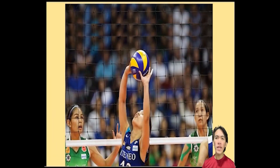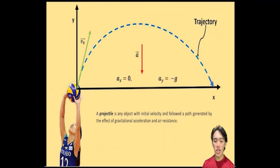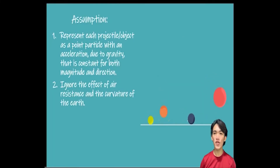What I want you to realize is that every time we set a ball, shoot a ball, or hit a ball, it follows a trajectory or a curved path — and that ball is a projectile. A projectile is any object with an initial velocity that follows a path generated by the effect of gravitational acceleration and air resistance. To analyze projectile motion, we will construct an idealized model.